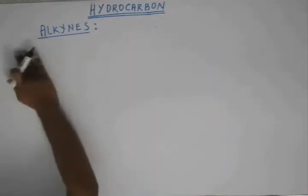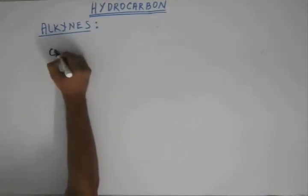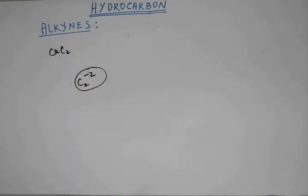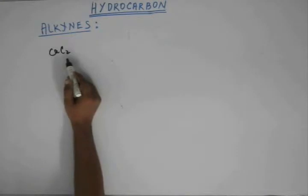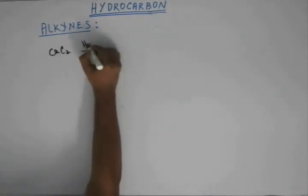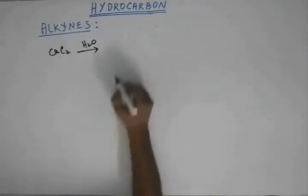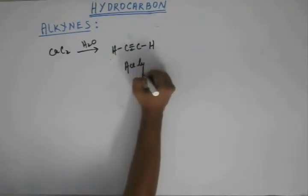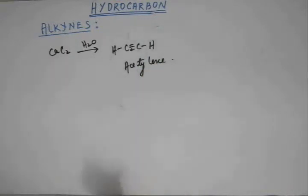Now, if I take calcium carbide — C₂²⁻ is the carbide ion. We can have magnesium carbide, calcium carbide, or sodium carbide. When the carbide ion comes in contact with moisture, acetylene is produced. Acetylene is the smallest alkyne, and carbides are found in nature. So we can use calcium carbide to get acetylene, and this is one of the methods of preparation specifically for acetylene.